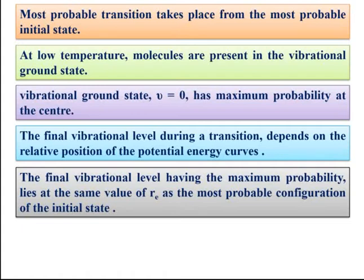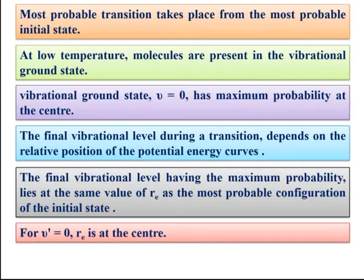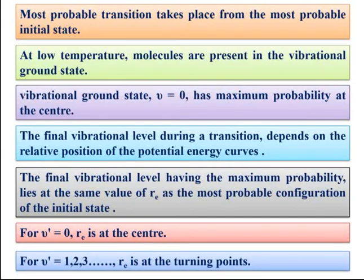If the equilibrium distance of the ground state is Re, then the vibrational level showing transition in the excited electronic state will be that which lies at the same value of equilibrium distance Re. For v' = 0, the equilibrium distance Re is at the center of the excited state potential energy curve. Whereas for other vibrational levels of the excited state — v' = 1, 2, 3 — Re is at the turning points.